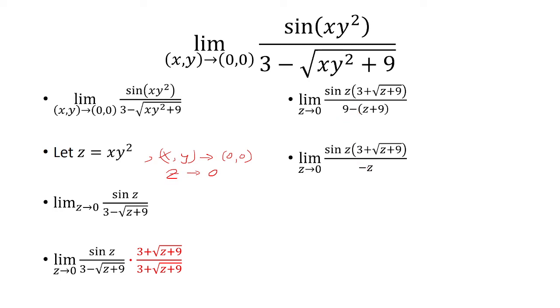The 9's cancel. We're left with negative z in the denominator. Now I can use a product rule for limits and break this up. I factor out the negative outside. I have sine of z over z, and then the second limit is 3 plus the square root of z plus 9.